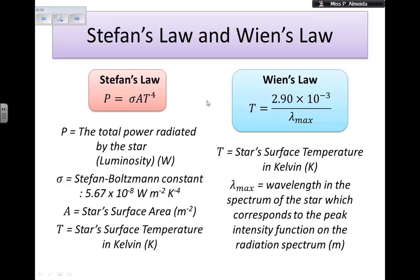So Stefan's law says that the power of my star, the luminosity, and therefore the absolute magnitude of my star, is going to depend on the temperature of the star and the surface area where this temperature can come out, so where the star can radiate the energy.